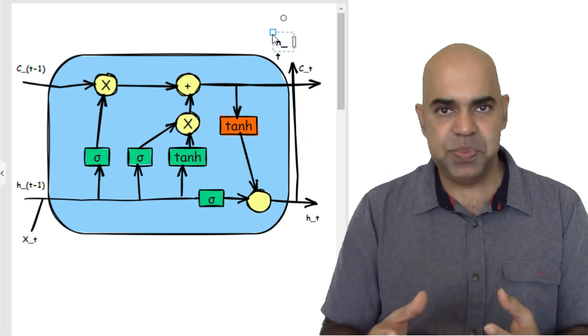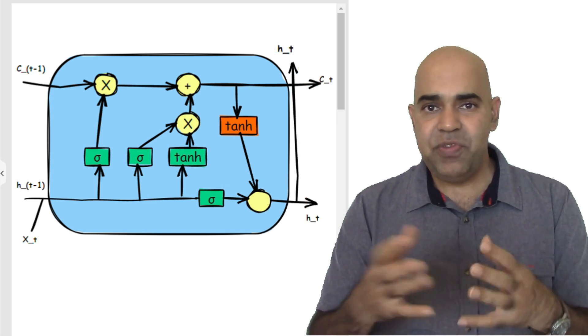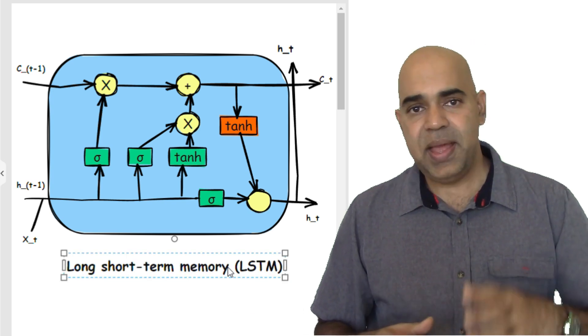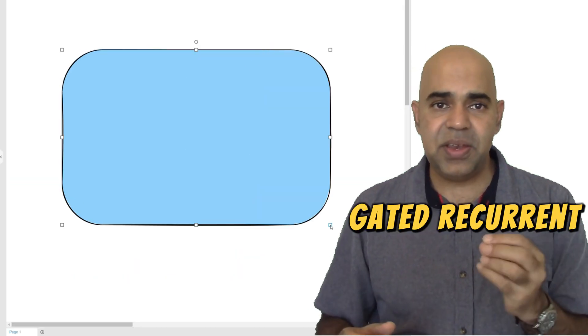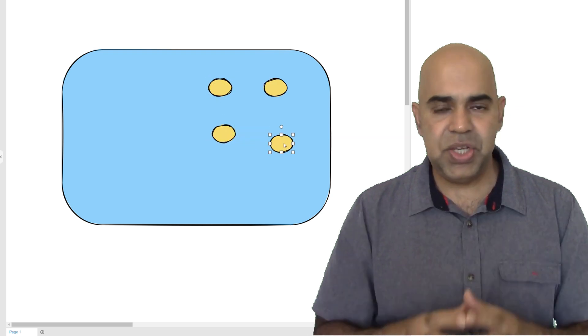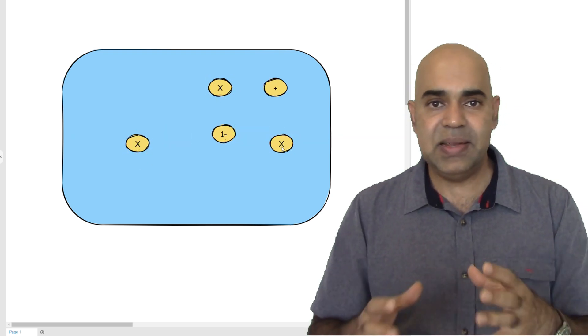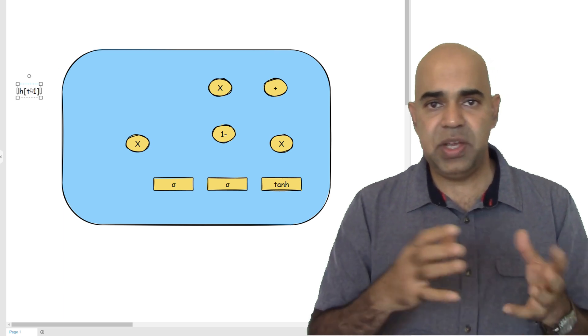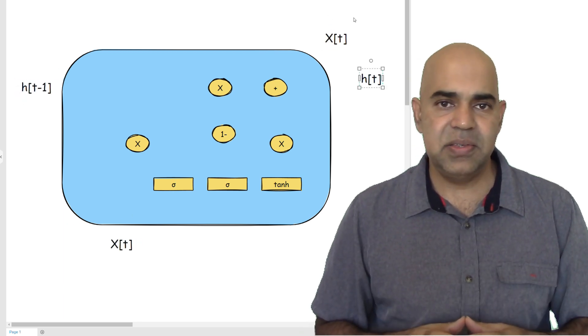LSTMs widespread adoption and popularity in various applications surged in the mid-2010s. Another technique, named Gated Recurrent Unit, or GRU, is similar to the LSTM as it was designed to solve the same problems of vanishing and exploding gradients in standard RNNs.